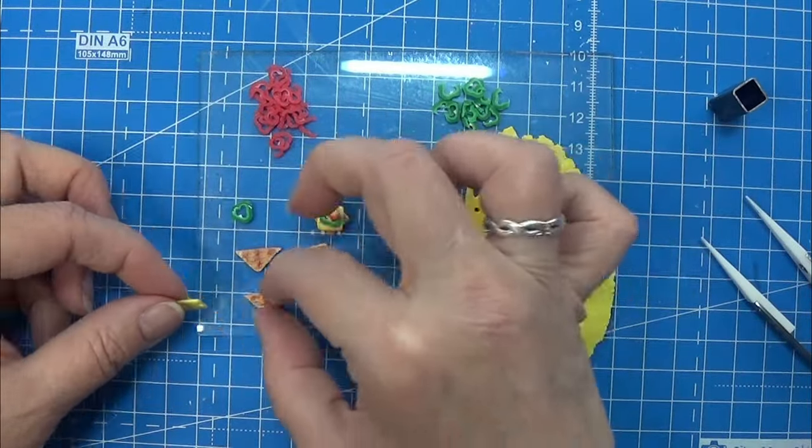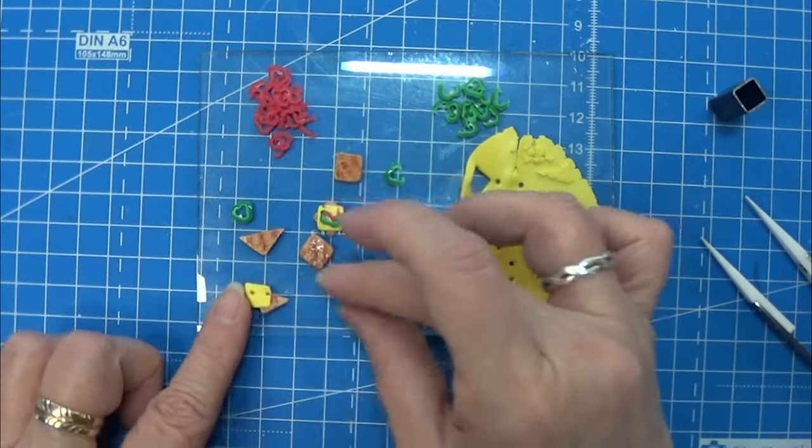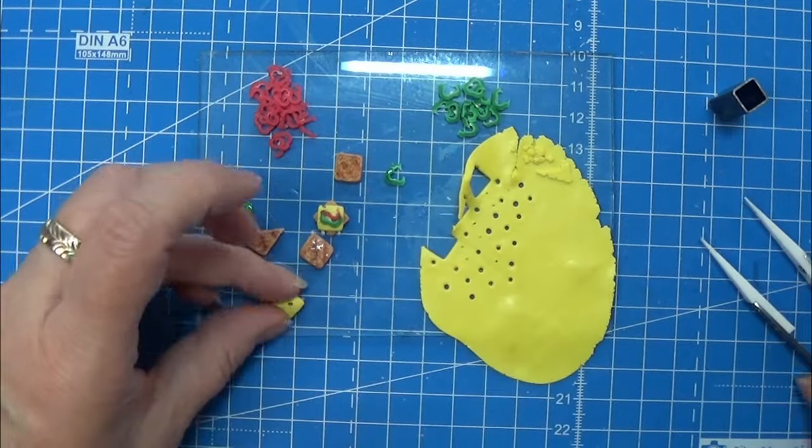And I'm just popping on the cheese here and then some of these bell peppers to make it look like a nice cheesy piece of bread here.